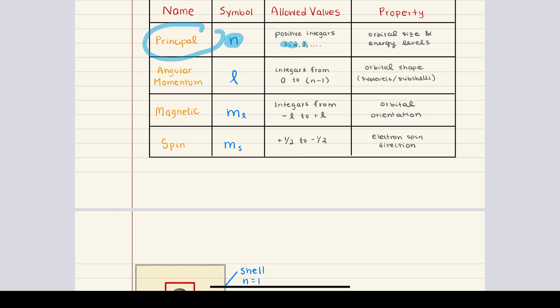However, n does not only describe size. It also determines the maximum number of electrons that a shell can hold. When n equals one, the shell can hold up to two electrons. When n equals two, up to eight electrons. When n equals three, up to 18 electrons. When n equals four, up to 32 electrons. These numbers may seem random at first.